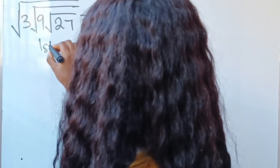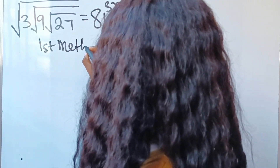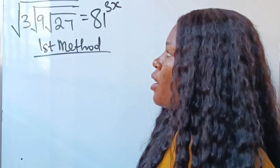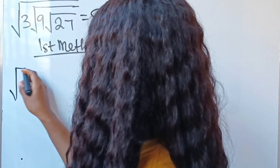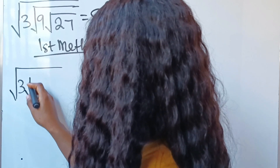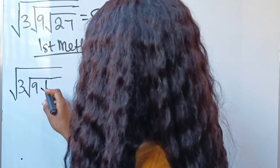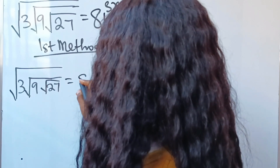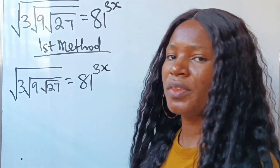Now, the first method is like this. This is what we are asked to solve: square root of 3, multiplied by root of 9, multiplied by root of 27, is equal to 81 to the power of 3x.